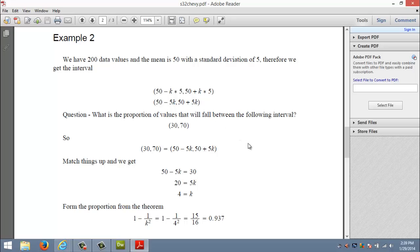Suppose the book asks us, what proportion of values will fall in the interval of 30 to 70? Well let's see, I match that up with the general k interval. 50 minus 5k matches up with 30, and so if I solve for k I get k is 4.